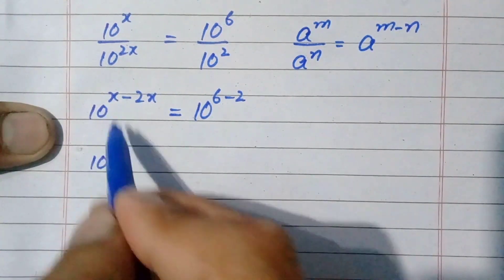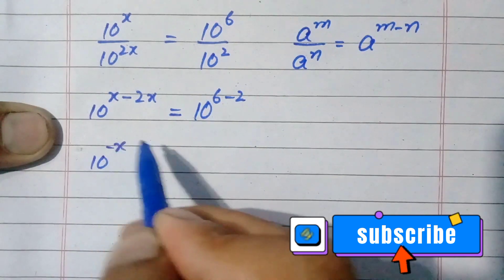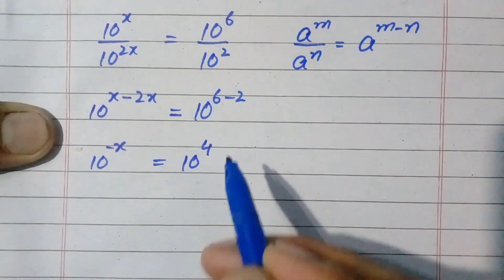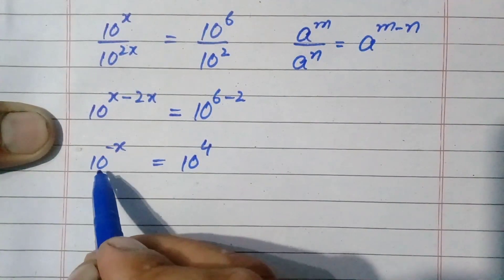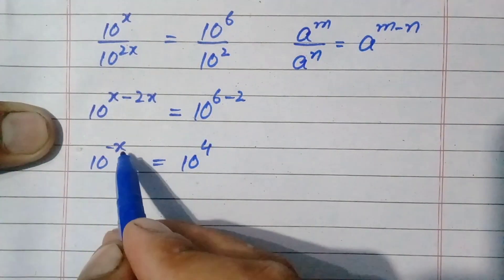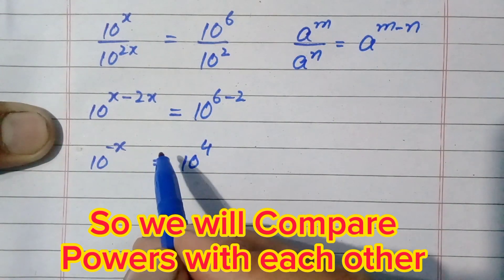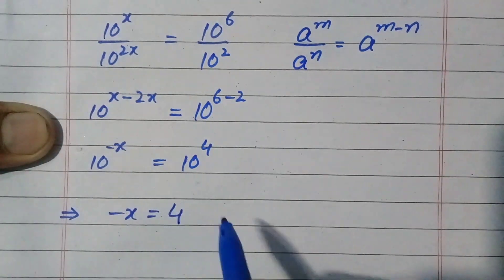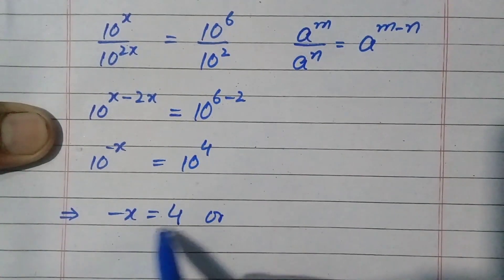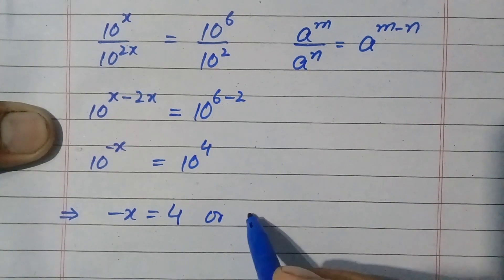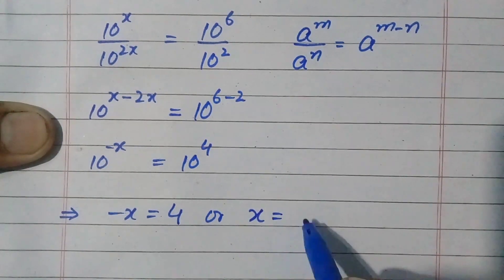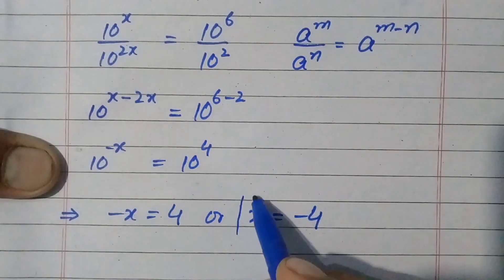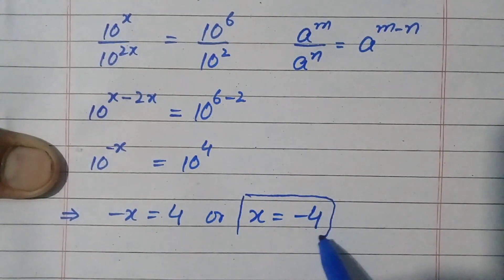Simplifying further, this becomes 10 raised to power minus x equals 10 raised to power 4. Since the bases are the same, we compare the exponents: minus x equals 4. Multiplying both sides by negative one, we get x equals minus 4. So x equals minus 4 is the solution of the above question.